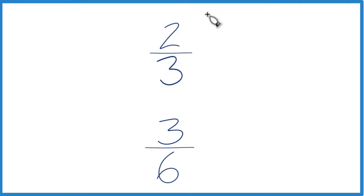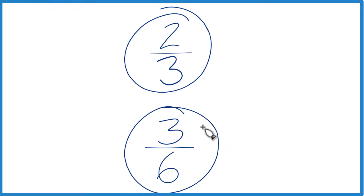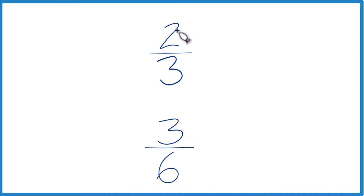Someone asked me to explain how you can tell which fraction is larger: two-thirds or three-sixths. There are a few ways to do it. You could just, on a calculator, convert these to decimals and compare them — that would tell you which is larger.